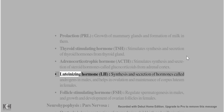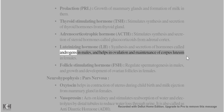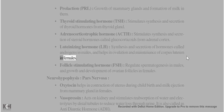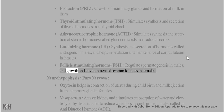Luteinizing hormone (LH) – stimulates synthesis and secretion of androgens in males, and helps in ovulation and maintenance of corpus luteum in females. Follicle stimulating hormone (FSH) – regulates spermatogenesis in males and growth and development of ovarian follicles in females.